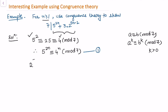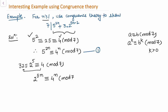Also notice that 2 to the power 5 is 32, and 32 is congruent to 4 modulo 7, because 32 minus 4 is 28 which is divisible by 7. So we can write 2 to the power 5n is congruent to 4 to the power n modulo 7. Let's call this Congruence 2.